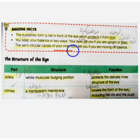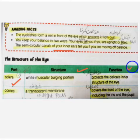In the ears, the balance of our body is maintained. Now the parts are clear: the white muscular bulging portion protects the inner structure of the eye.